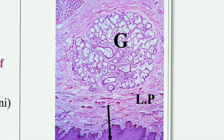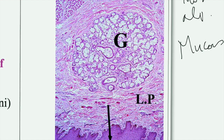The minor salivary gland found in the inner lip is called the labial gland. It is a tubular alveolar gland and is predominantly a mucous gland, as seen by the pale cells and basal nuclei at the acini. Tubular alveolar means that the secretory part is partly in the form of a tube and partly in the form of an acinus or alveolus.